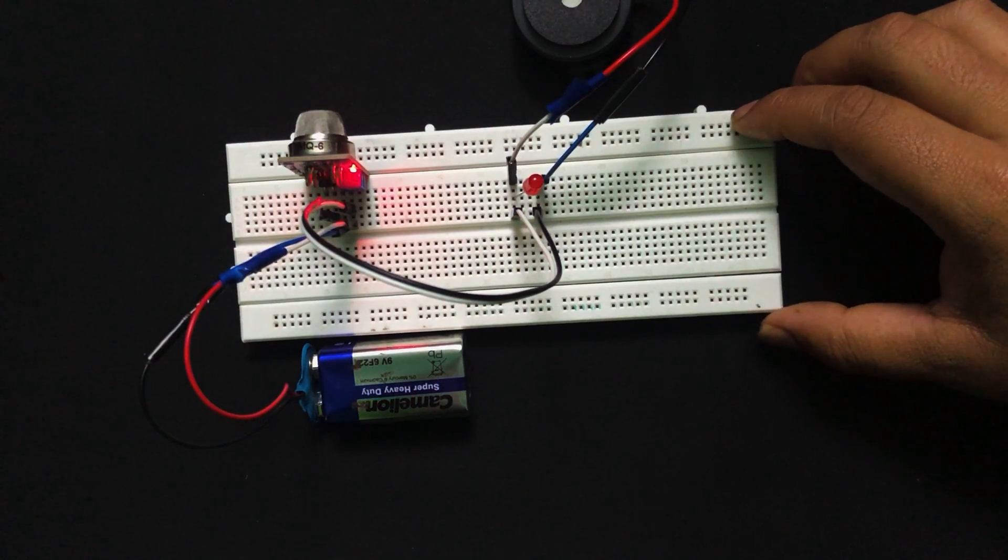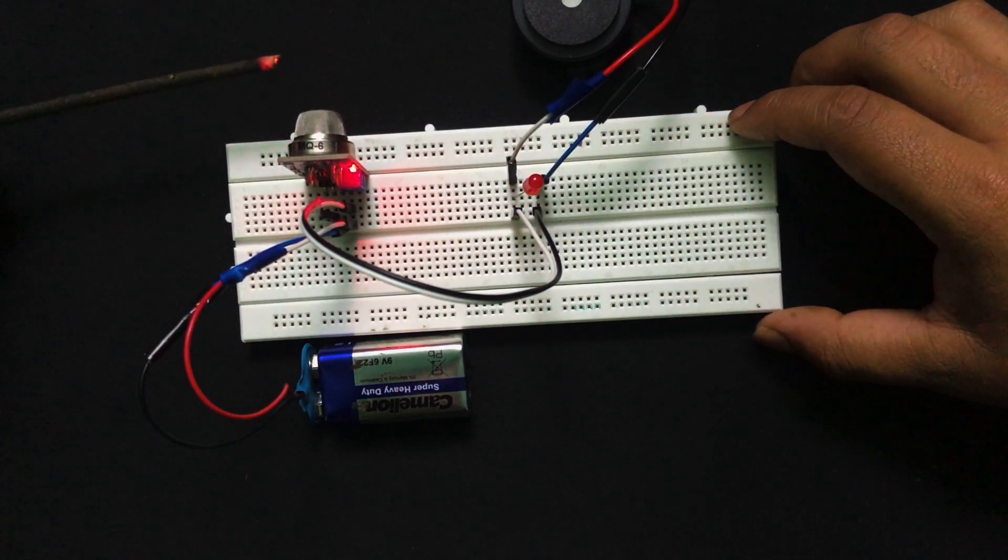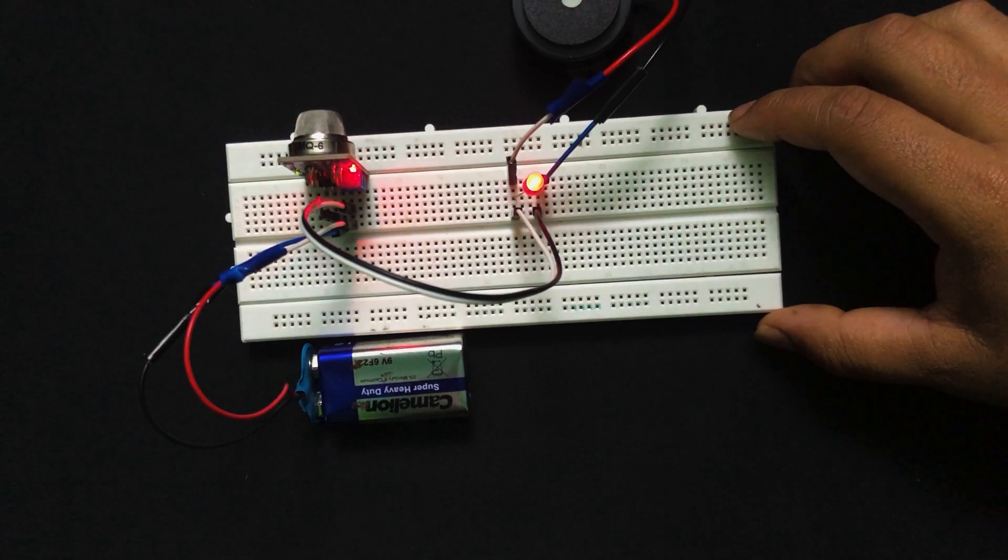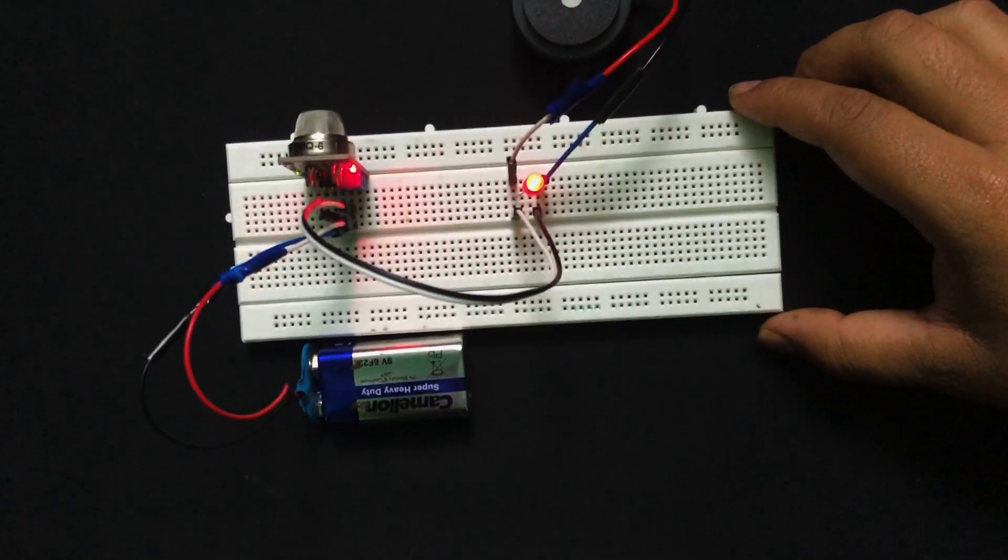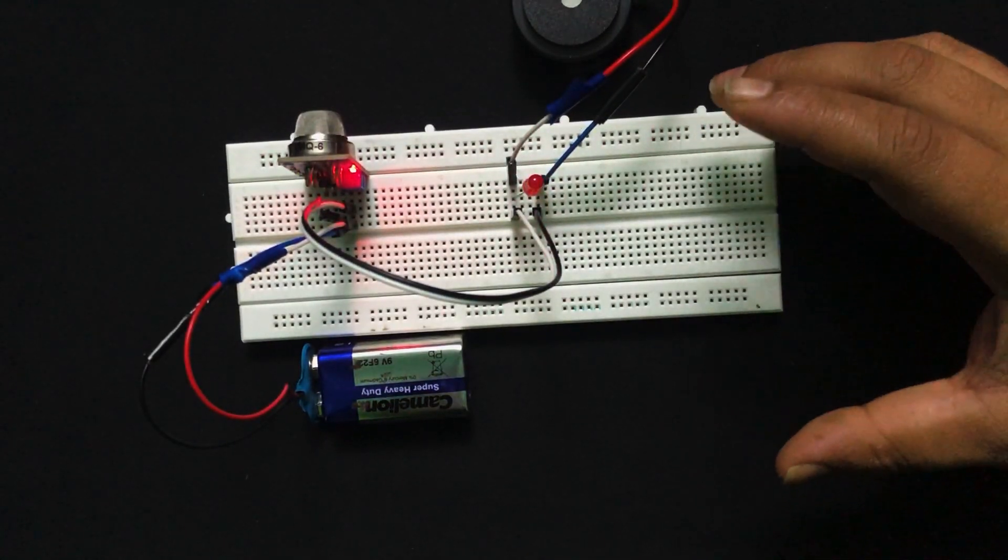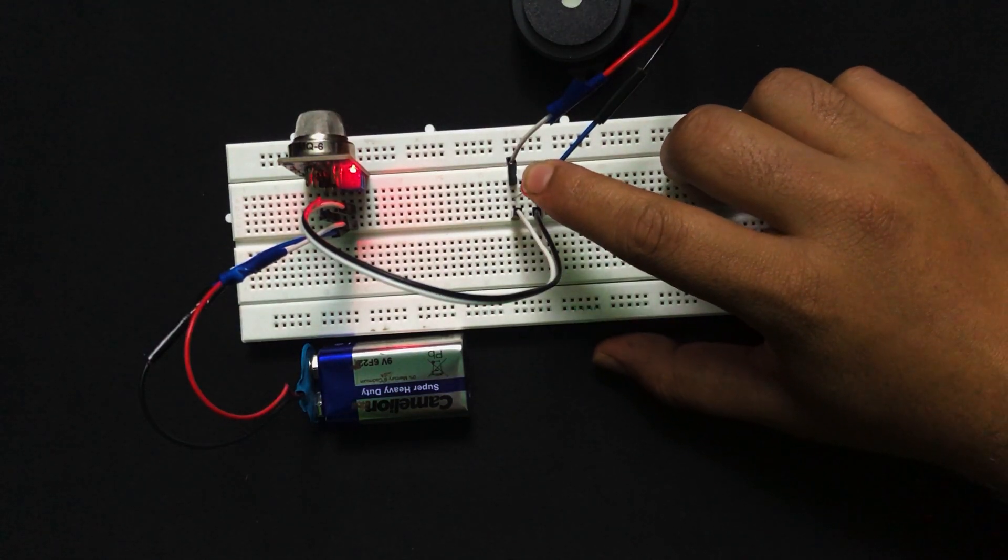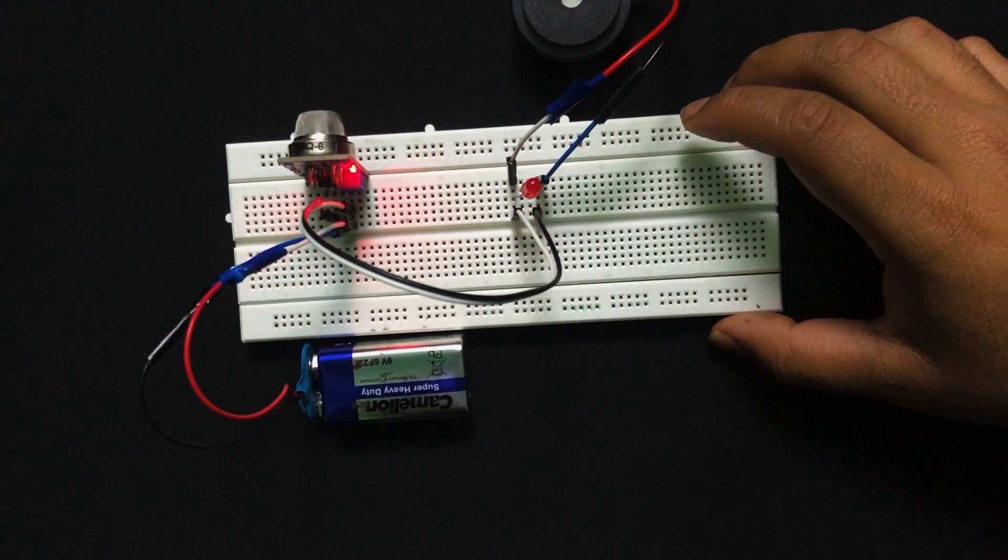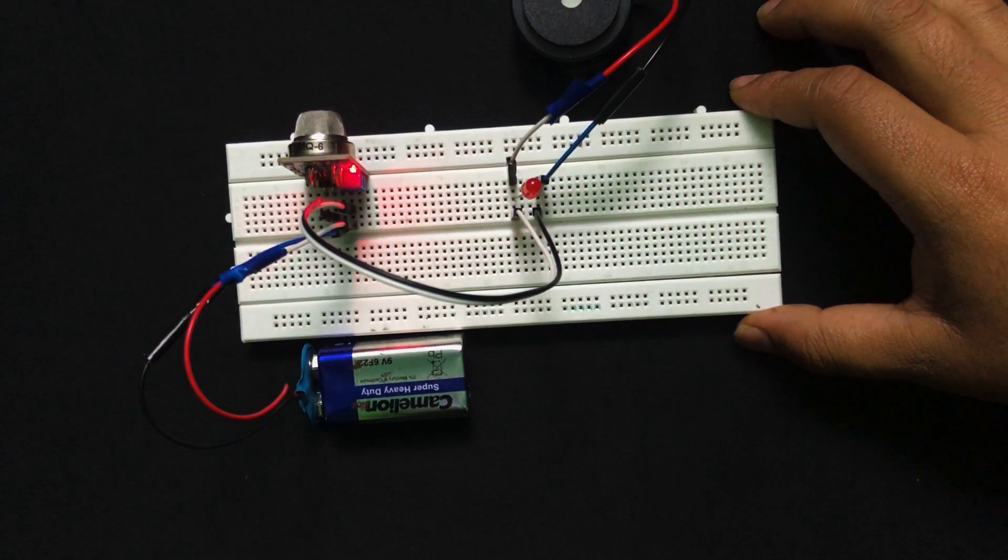Let us check it once again. As you can see, whenever there is smoke the circuit lights up. Now let it cool and as you can see it has turned off. Thank you for watching this video. I hope you learned something new. Please like and share.